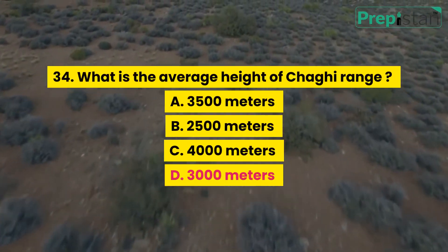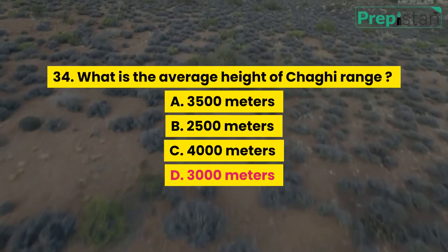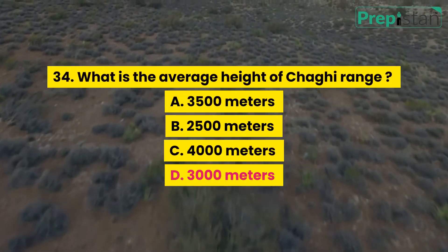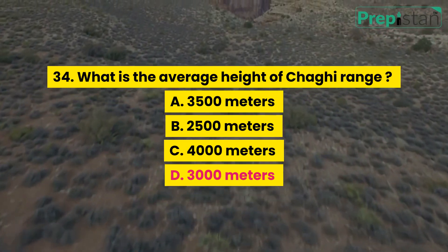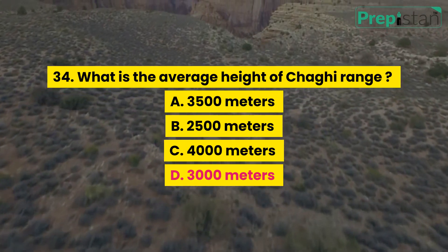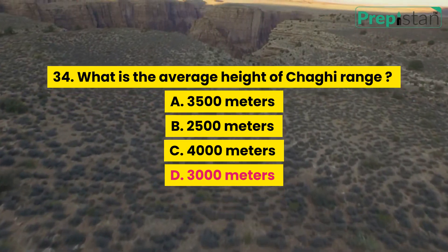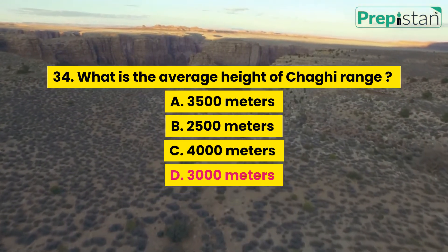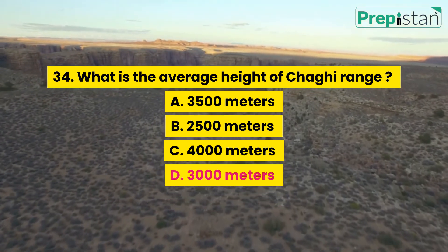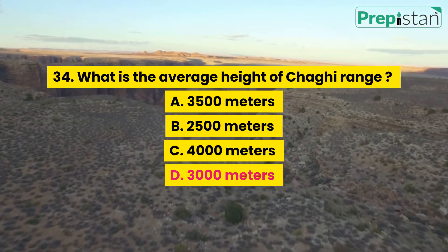Question 34: What is the average height of Chagai range? A. 3,500 meters, B. 2,500 meters, C. 4,000 meters, D. 3,000 meters.